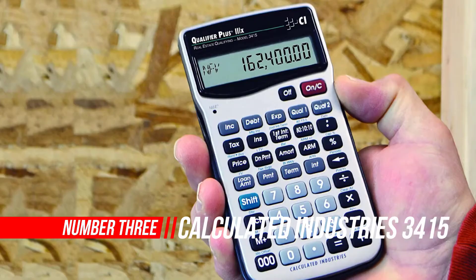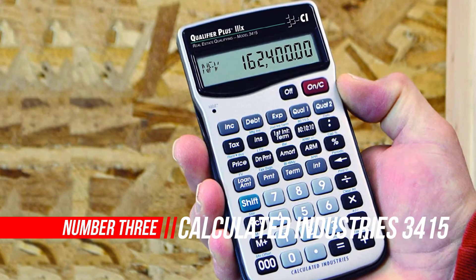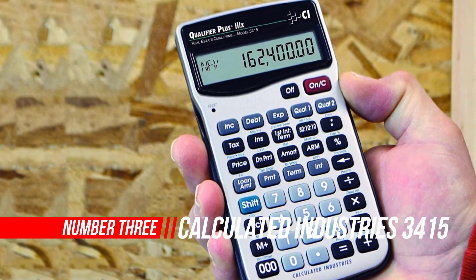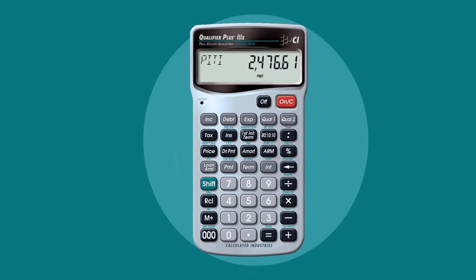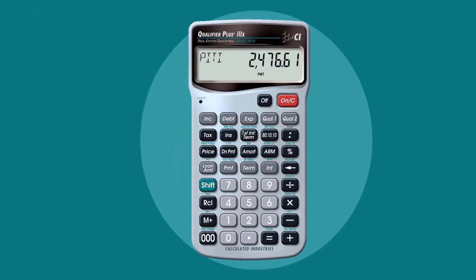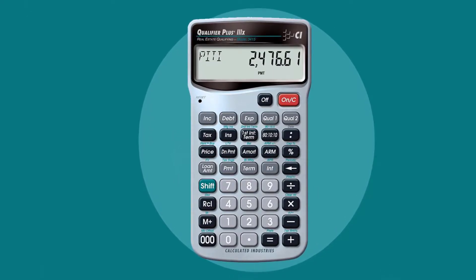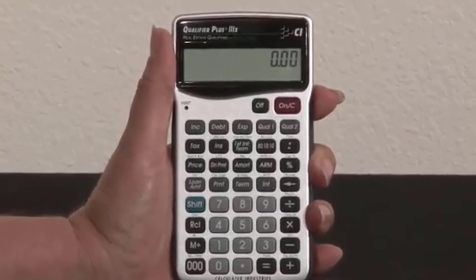Number 3. Calculated Industries 3415 Qualifier Plus IIIX Advanced Real Estate Mortgage Finance Calculator. Qualify home buyers right on the spot with a versatile, easy-to-use Qualifier Plus IIIX Real Estate Finance Calculator from Calculated Industries.